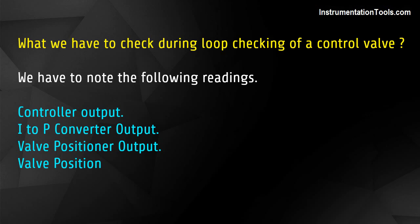What do we have to check during loop checking of a control valve? We have to note the following readings: controller output, I to P converter output, valve positioner output, and valve position.